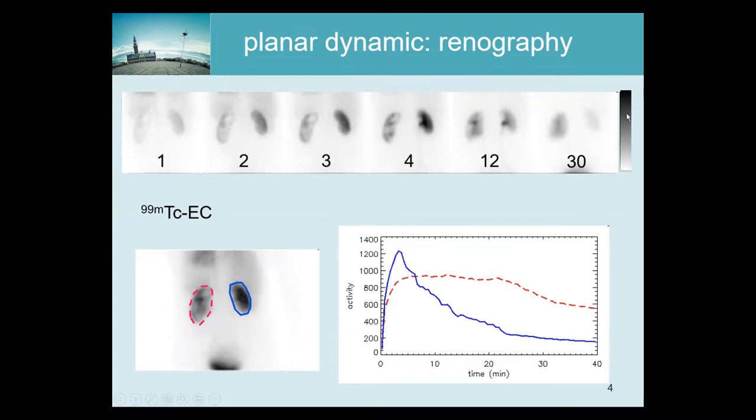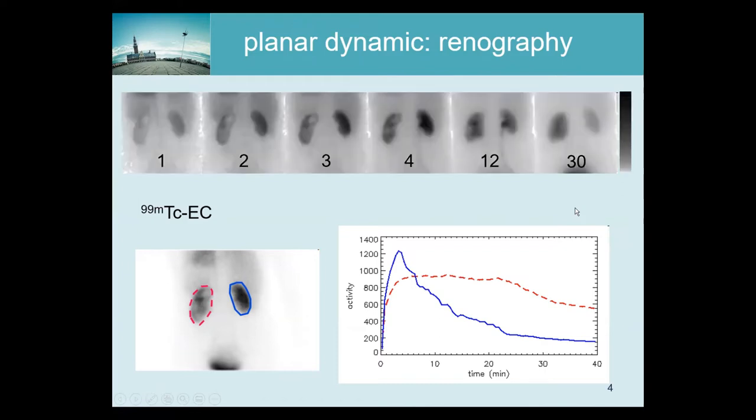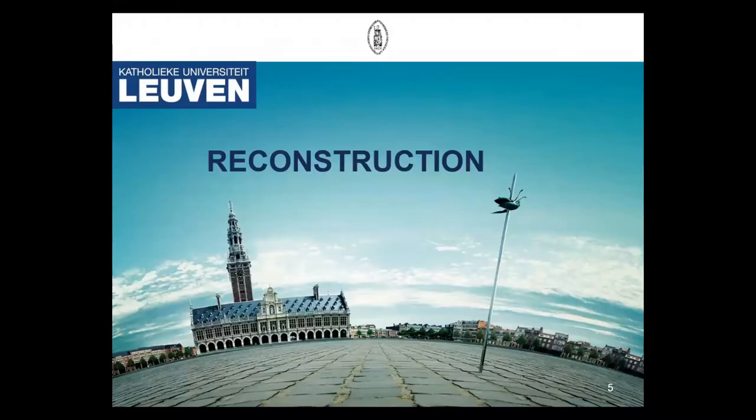And here you also see that in some cases it can be very useful to have this lookup table, because if you adjust the lookup table you really see different things here. Okay, so this for planar imaging. There are other examples but they're all similar. More can be said about reconstruction because it's a bit more complicated.